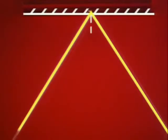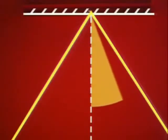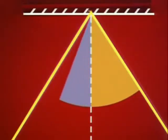The ray of light approaching the mirror is called the incident ray. The one leaving the mirror is the reflected ray. Imagine drawing a line at right angles to the mirror where the beam strikes it. The angle between this line and the incident ray is the angle of incidence. The angle between this line and the reflected ray is the angle of reflection.